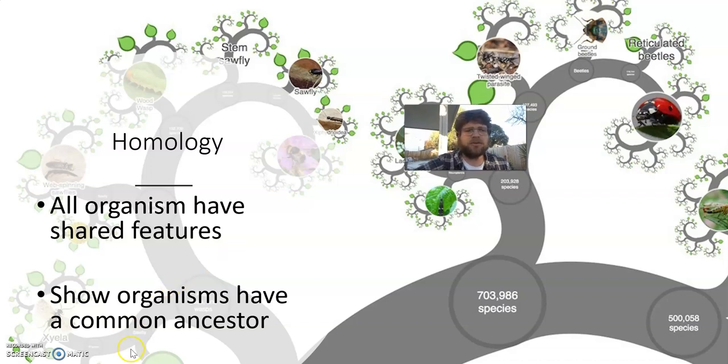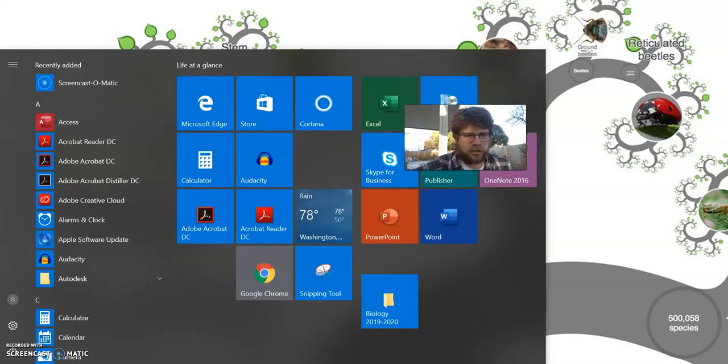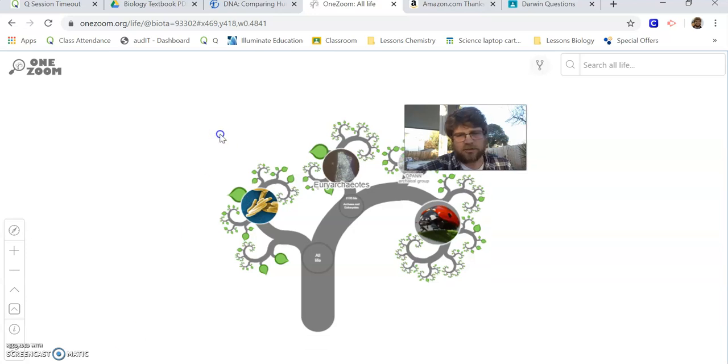And scientists say that these shared features show that organisms have some common ancestor and we have been slowly changed, that that common ancestor has been slowly changing into all the forms we have today. Now let's take a quick look at when I say shared ancestor what does that mean?